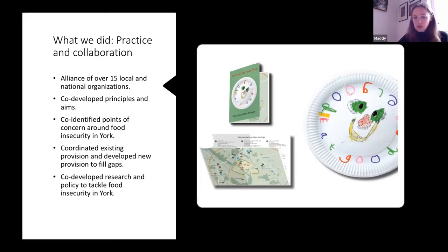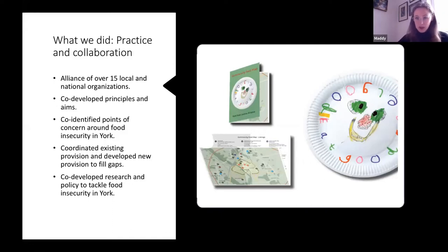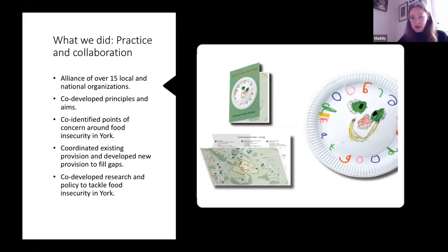We gained some match funding from the local authority and used this small pot of money for the initial setup of the alliance. We had a few organisations that were keen to take part, but then spent a lot of time reaching out — it was a mixture of organisations providing food aid, like food banks and community cafes, the local authority as a key partner, the two universities in York, and even the local football club who had a charity arm. A lot of it was legwork — I cycled over to organisations and said 'we're doing this, are you interested?' Through that word of mouth, we set up a diverse alliance with small community cafes and national organisations like the Joseph Rowntree Foundation.